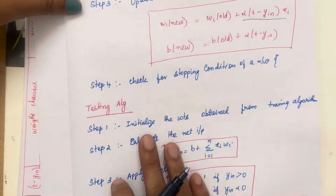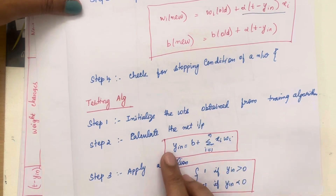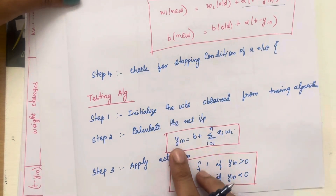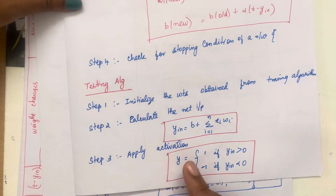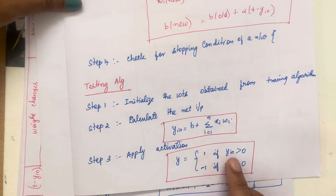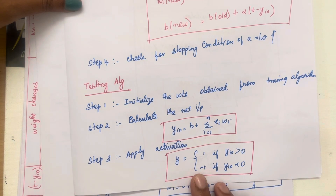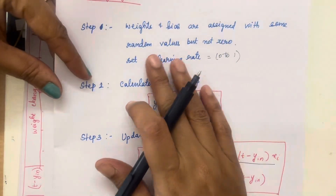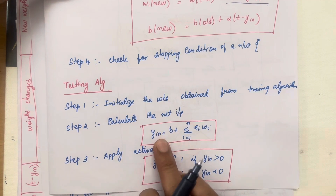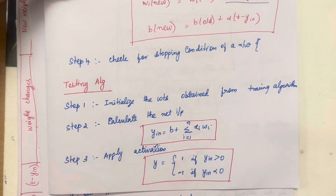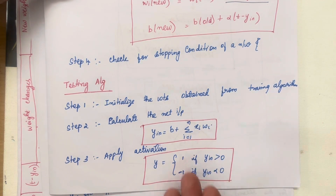The testing algorithm uses the weights obtained from training to calculate y_input and applies the activation function to find y. The activation is: if y_input > 0, set y = 1; if y_input < 0, set y = −1. Note that in the training algorithm we do not calculate activation — only during testing do we calculate y_input and y and compare with the target value. If they match, the weights from training are correct.